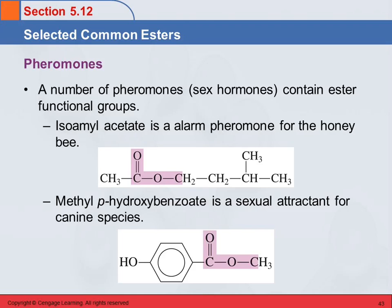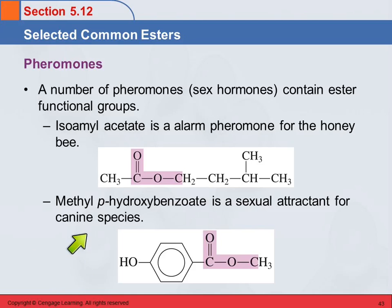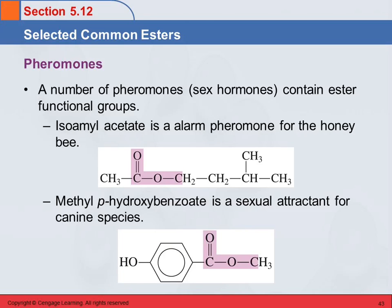Other common esters are pheromones — sex hormones — and many of these have ester functional groups. This is isoamyl acetate, and you don't need to know the name. It's the alarm pheromone for honeybees: when a honeybee releases isoamyl acetate, all the other honeybees understand something dangerous is happening, and that's when they start stinging you. This other ester is a sexual attractant for canine species — methyl parahydroxybenzoate. We can look at the name: here's the methyl, and this is hydroxybenzoate — benzoic acid with a hydroxy group on it.